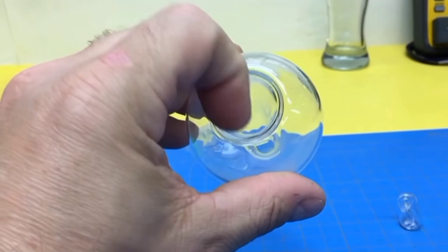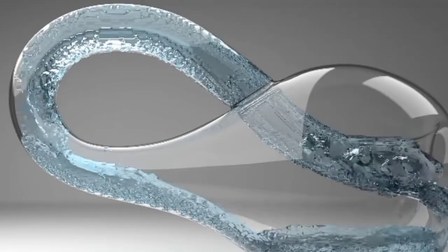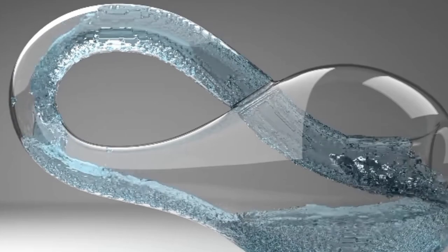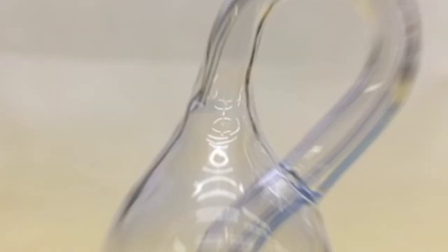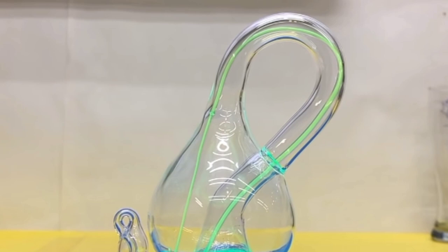Now, you might wonder, how is a Klein Bottle constructed? Well, imagine taking a long tube and twisting one end, passing it through the side, and connecting it to the other end. Sounds confusing? That's because it is. But that's precisely what makes the Klein Bottle so fascinating.